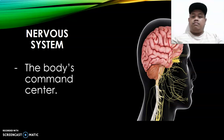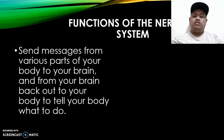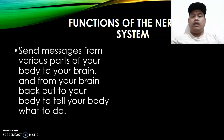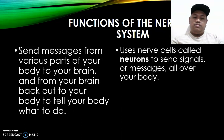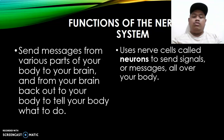The nervous system is the body's command system. It sends messages from various parts of your body to your brain and from your brain back out to your body to tell your body what to do. It receives stimuli and responds accordingly. It uses nerve cells called neurons — the building blocks of the nervous system — to send signals all over your body. These neurons are interconnected with synapses that pass signals from one neuron to another in 0.00 milliseconds.